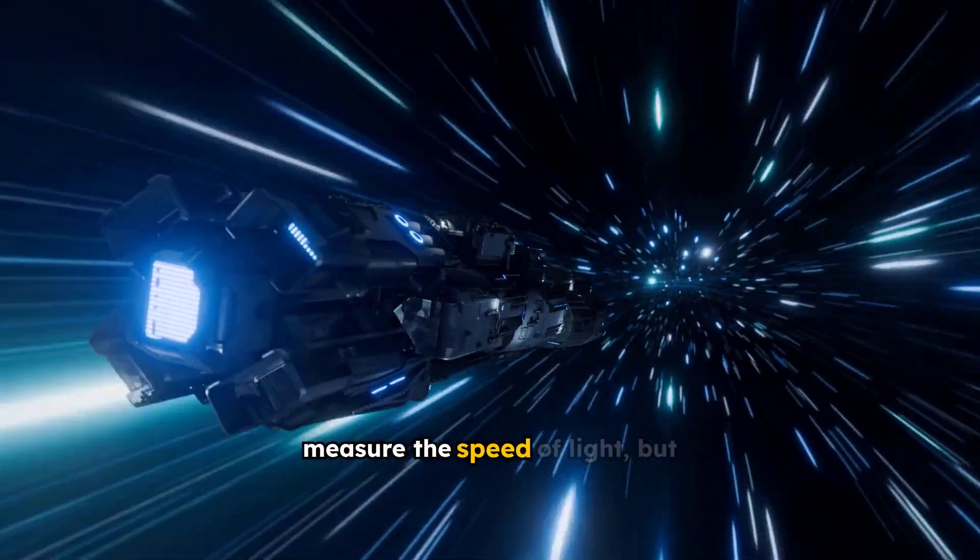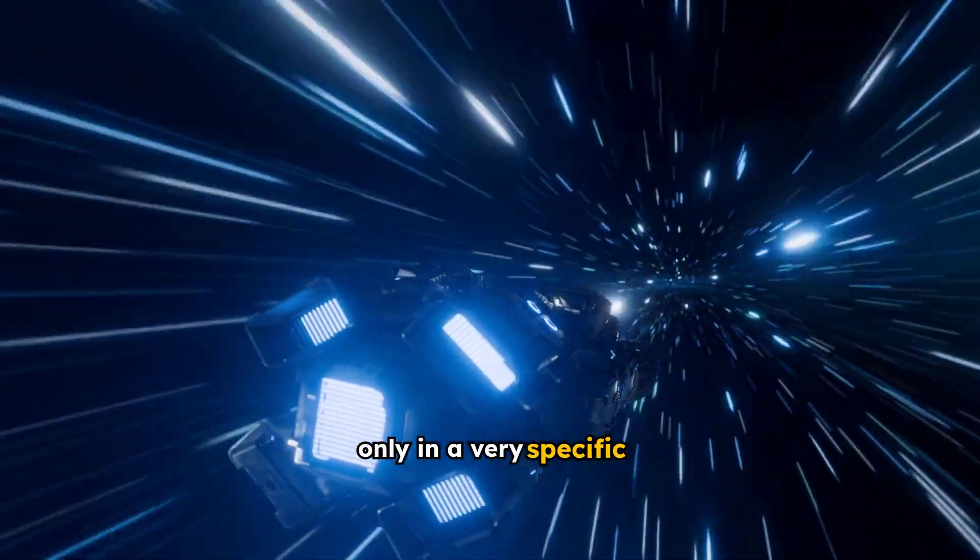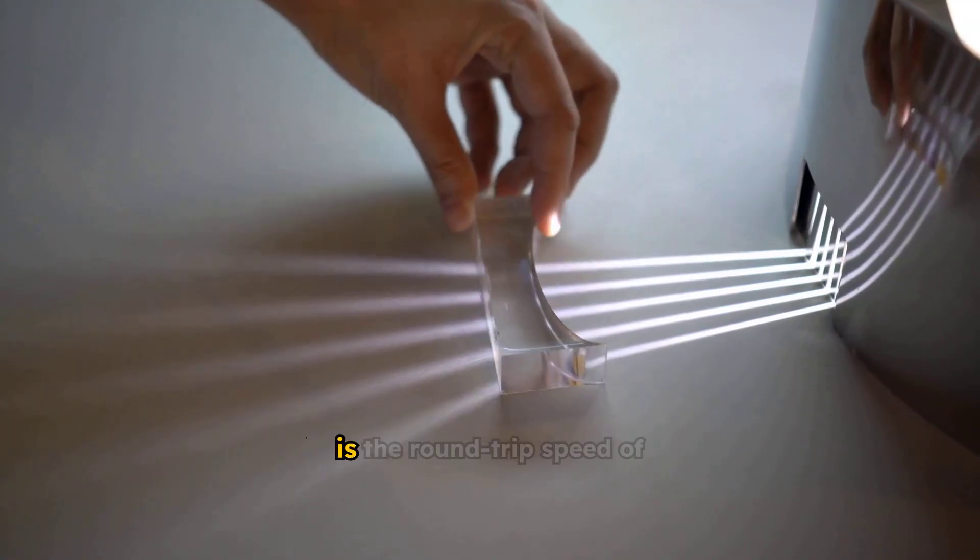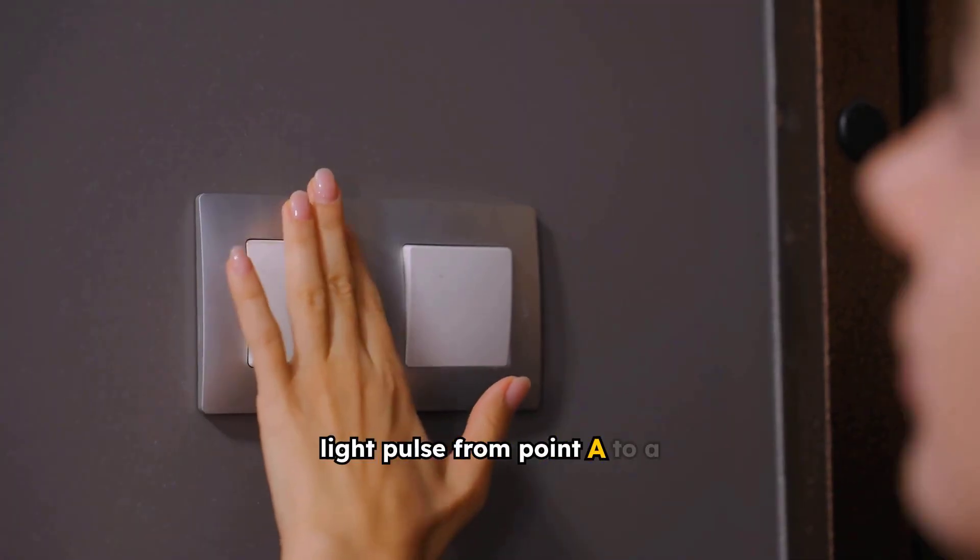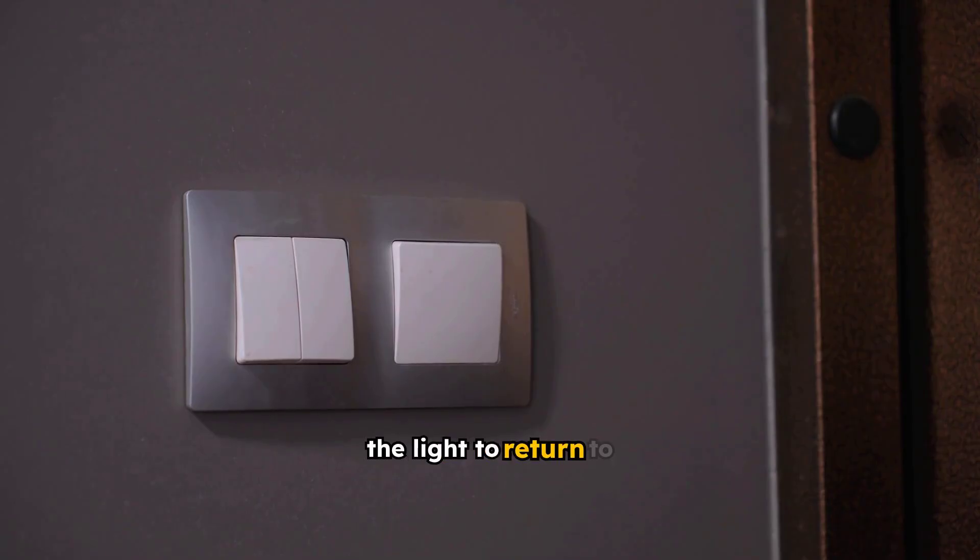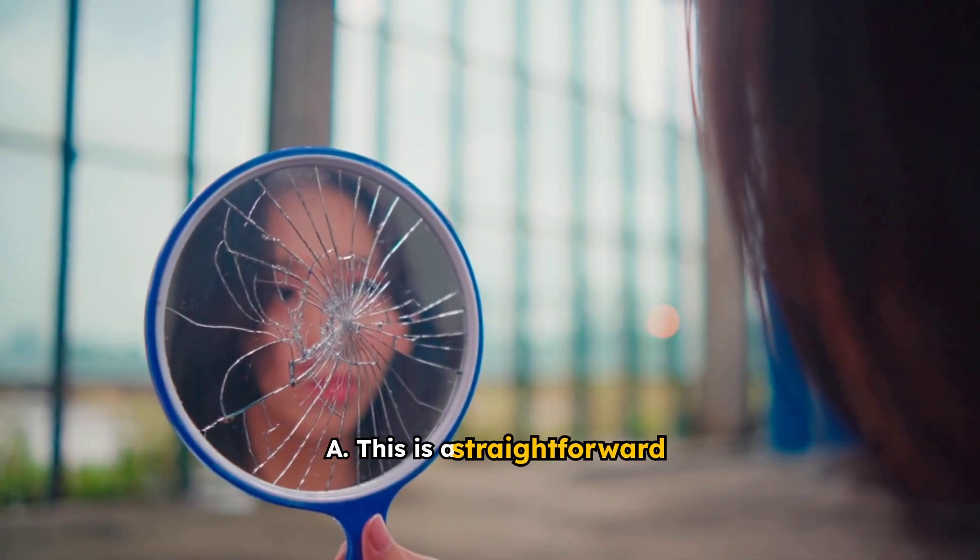We can measure the speed of light, but only in a very specific way. What we can and do measure is the round-trip speed of light. Imagine sending a light pulse from point A to a mirror at point B, then timing how long it takes for the light to return to A. This is a straightforward measurement.